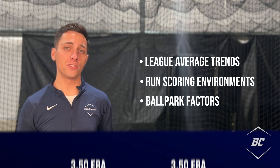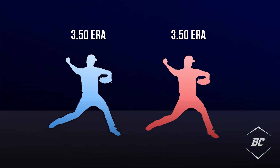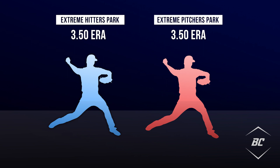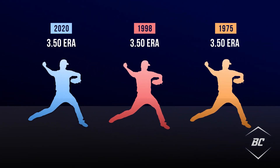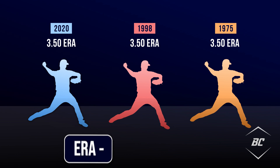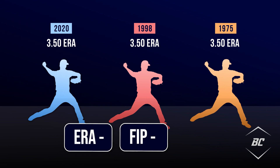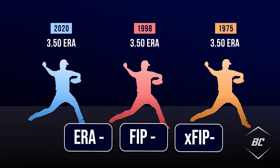Consider this: is it fair to say that two pitchers who have the same ERA are of equal ability if one pitches in an extreme hitter's park while the other pitches in an extreme pitcher's park? Further, is a 3.5 ERA better in 2020 than it was in 1998? How about 1975? That's where stats like ERA minus, FIP minus, and XFIP minus come into play.